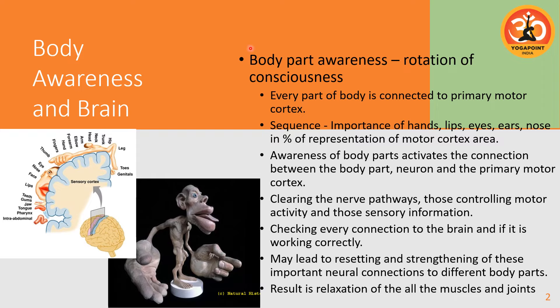If you understand it physiologically, every body part has a represented area in our frontal lobe — the primary motor cortex, also called the sensory motor cortex. In this diagram, you can see a cross-section showing how much cortical area is attributed to each body part. Disproportionately high importance is given to the hands, lips, eyes, ears, and nose — representing almost 70 to 80% of the cortex area.